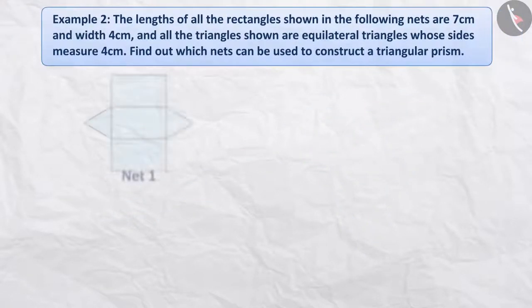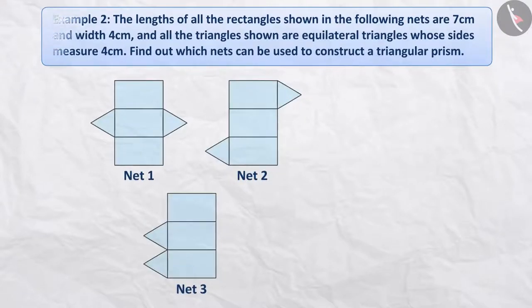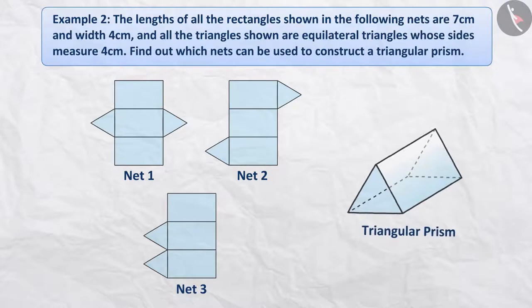Example 2: The lengths of all the rectangles shown in the following nets are 7 cm and width 4 cm. And all the triangles shown are equilateral triangles whose sides measure 4 cm. Find out which nets can be used to construct a triangular prism.